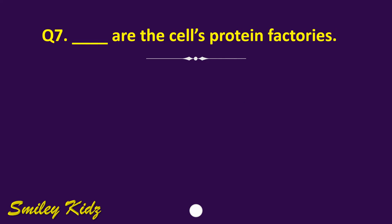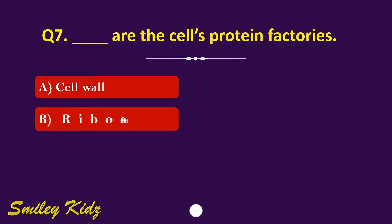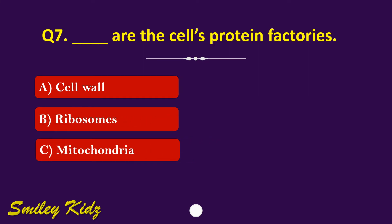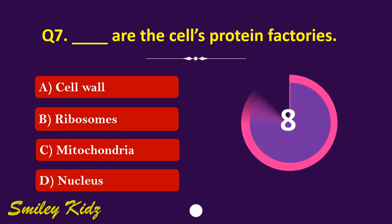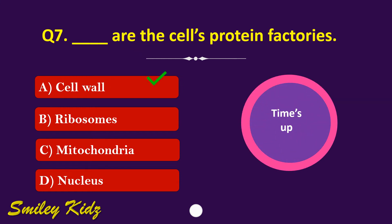Question number 7. Dash are the cell's protein factories. The options are: A. Cell wall, B. Ribosomes, C. Mitochondria, or D. Nucleus. Your time starts now. Your time is up and the right answer is option B. Ribosomes. Ribosomes are the cell's protein factories.